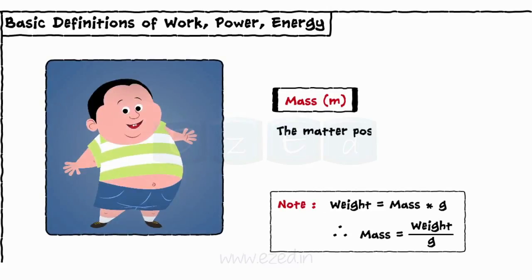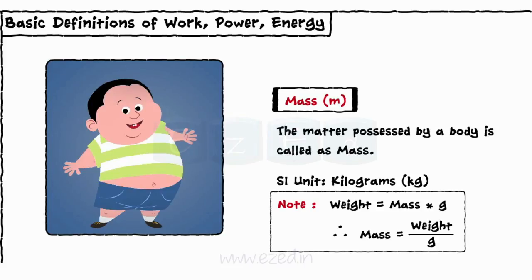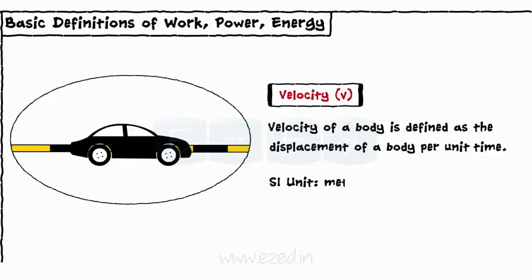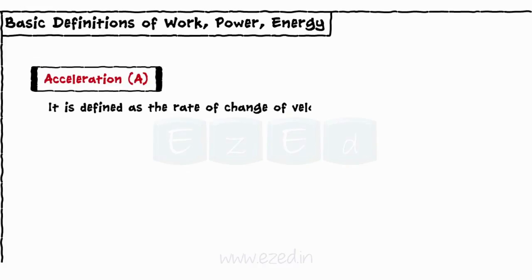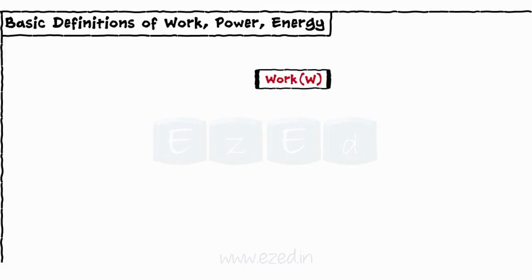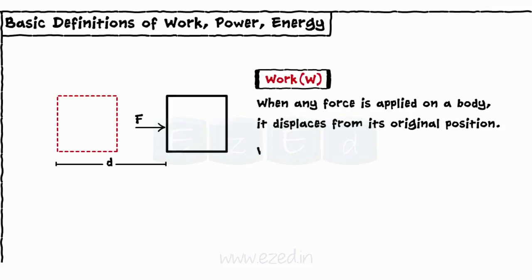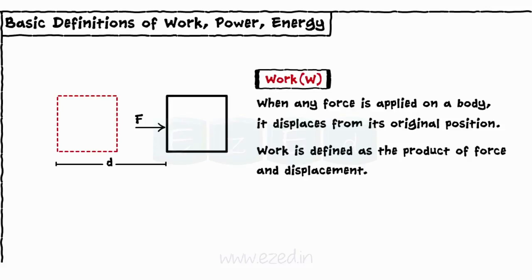Now let's see some basic definitions. The matter possessed by a body is called mass; its SI unit is kilograms. Velocity is defined as the displacement of a body per unit time; its SI unit is meters per second. Acceleration is defined as the rate of change of velocity; its SI unit is meters per second squared. Work: when any force is applied on a body, it displaces from its original position. Work is defined as the product of force and displacement: W equals F into D. The SI unit of work is joules or Newton meter.